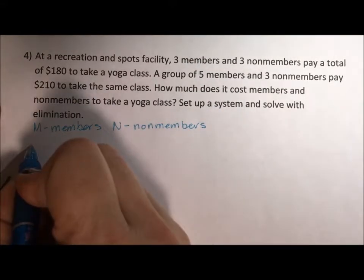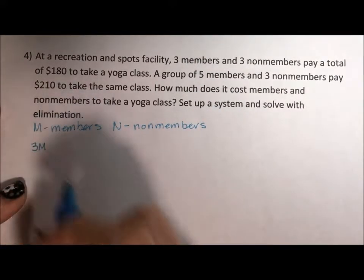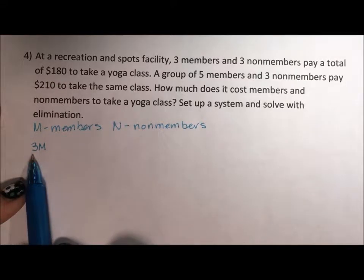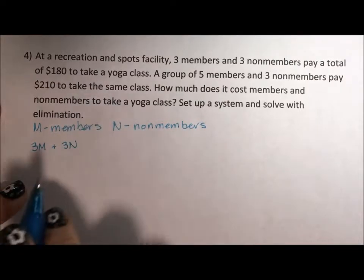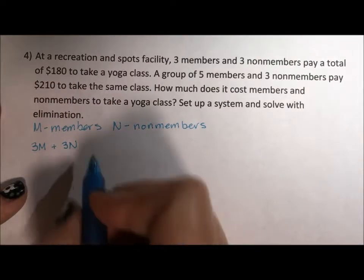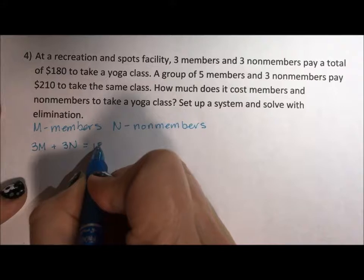Let's see, it says three members. So whatever the members pay, we multiply that by three and three non-members. Whatever the non-members pay, we multiply it by three and the total payment is $180.